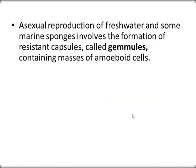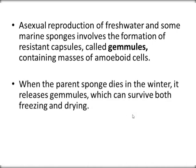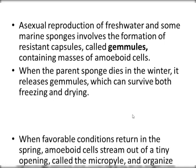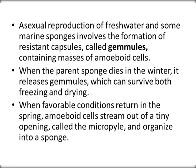Asexual reproduction in freshwater and some marine sponges involves the formation of resistant capsules called gemmules, containing masses of amoebocyte cells. When the parent sponge dies in winter, it releases gemmules which can survive both freezing and drying. When favorable conditions return in spring, amoebocyte cells stream out through a tiny opening called the micropyle and organize into a new sponge.